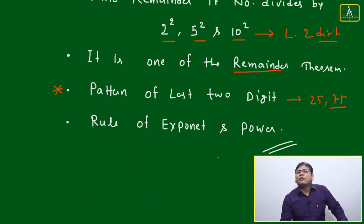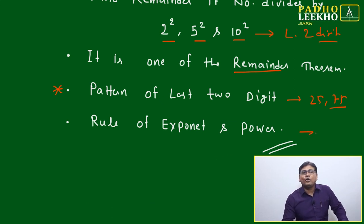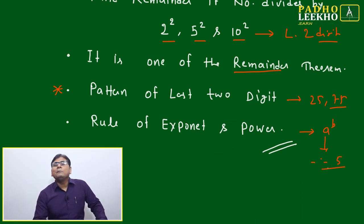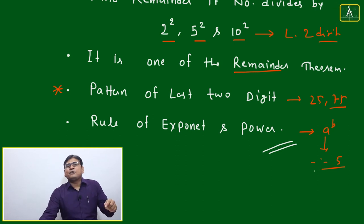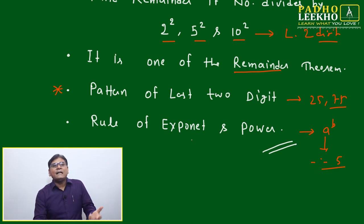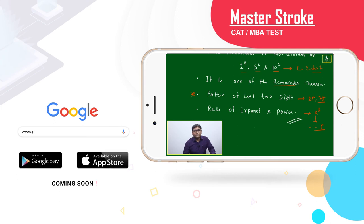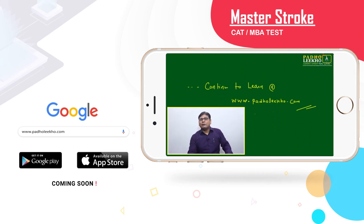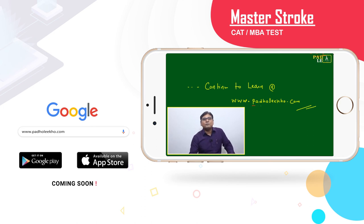The rule of exponents and powers is also applicable since the number will always be in the form a to the power b, where a always ends with 5 and b is any positive number. If you get any confusion regarding expansion of a to the power b, you can apply the rules of exponents and powers. Keep on learning, love what you are learning, and visit parolico.com. Thank you.